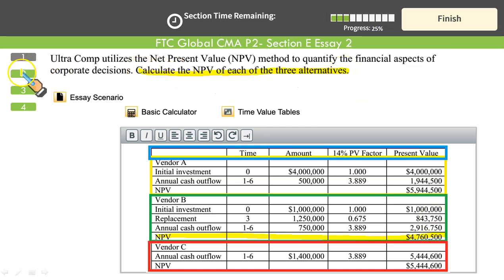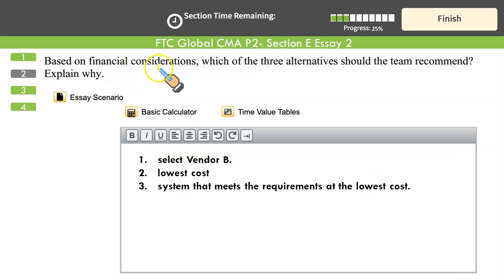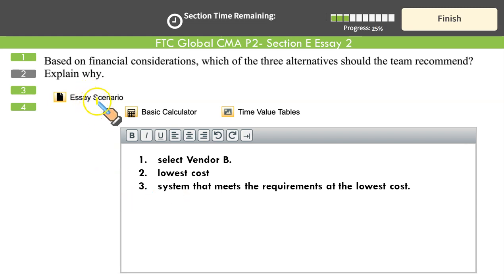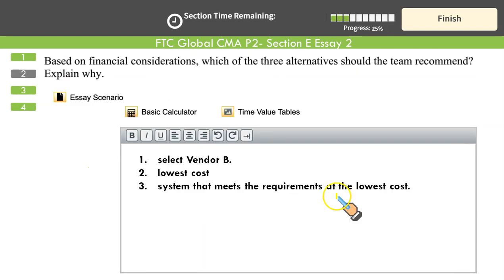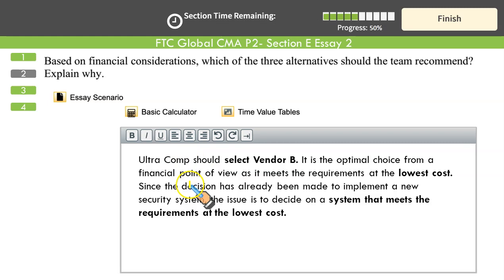Question 2 says: based on the financial consideration, which of the 3 alternatives should the team recommend? Explain why. Of course, we will select Vendor B — reason: lowest cost. And not just the numbers; we also need to see some other soft information given the scenario. Vendor B is an established firm in the security industry and has a security system that has been on the market for several years — not as risky as A, and still has the lowest cost. So B is recommended: a system that meets the requirement at the lowest cost. These are the points to include for a developed answer covering the selection of Vendor B, why you select it, and further justification.